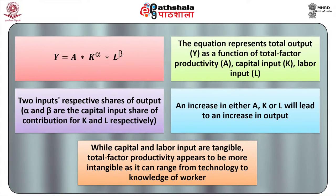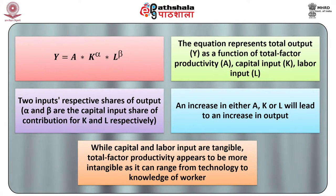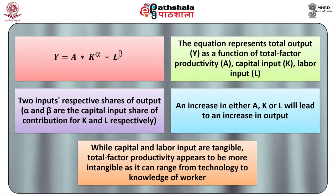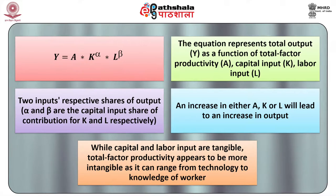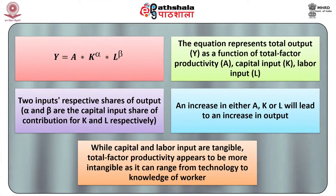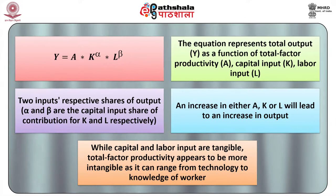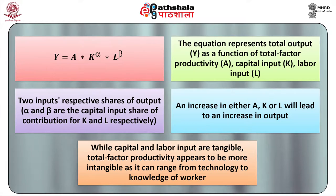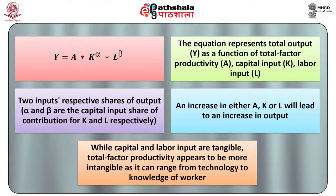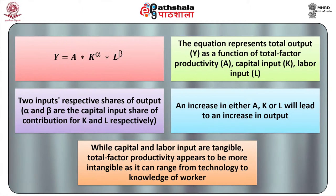TFP cannot be measured directly. Instead, it is a residual — often called the Solow residual — which accounts for effects in total output not caused by inputs. The equation in Cobb-Douglas form represents total output as a function of total factor productivity A, capital input K, labour input L, and their respective output shares alpha and beta. An increase in A, K, or L will lead to an increase in output. While capital and labour inputs are tangible, TFP is more intangible, ranging from technology to human capital. Y equals A times K raised to the power alpha times L raised to the power beta.